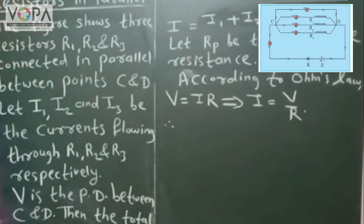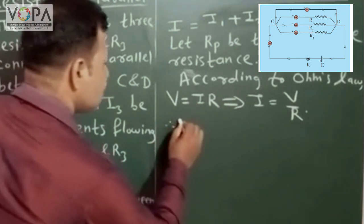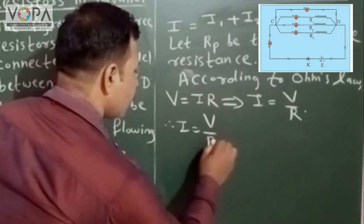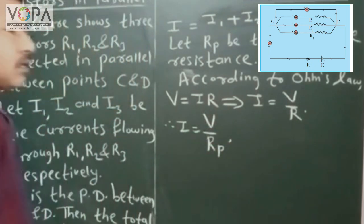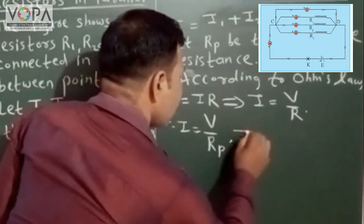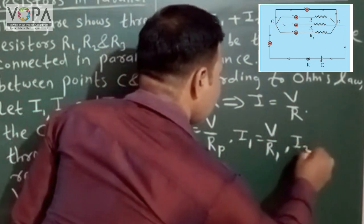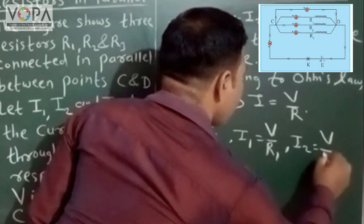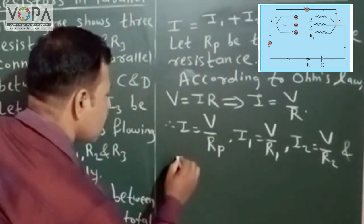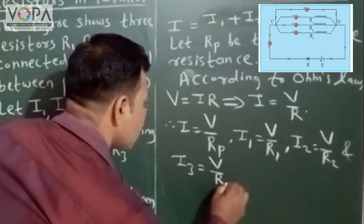Therefore, for effective resistance Rp, we can write the total current as I = V / Rp. Similarly, we can write the current going through resistor R1 as I1 = V / R1, I2 = V / R2, and I3 = V / R3.